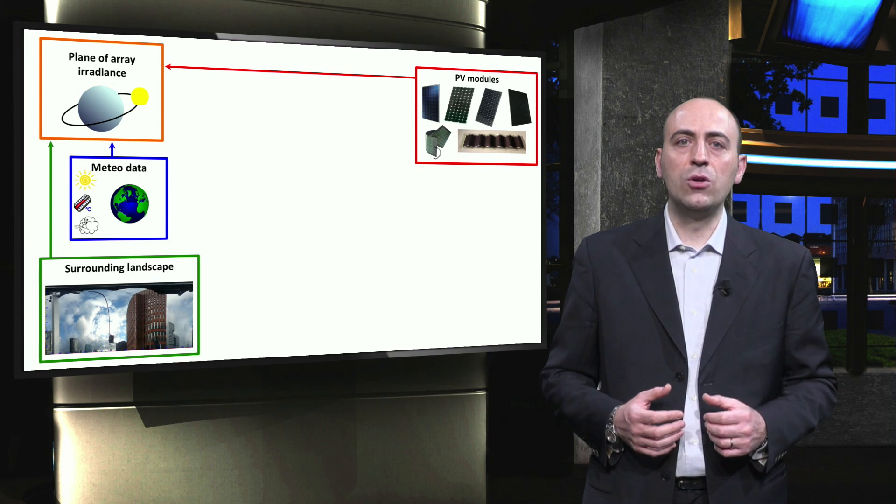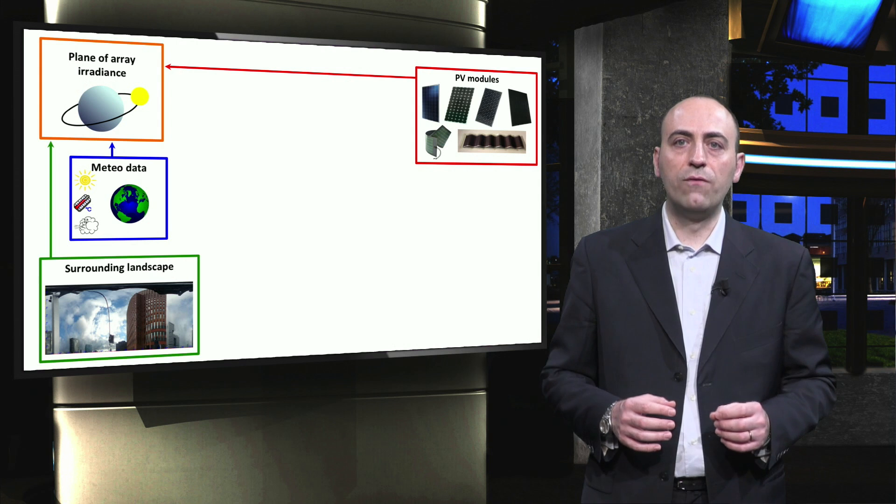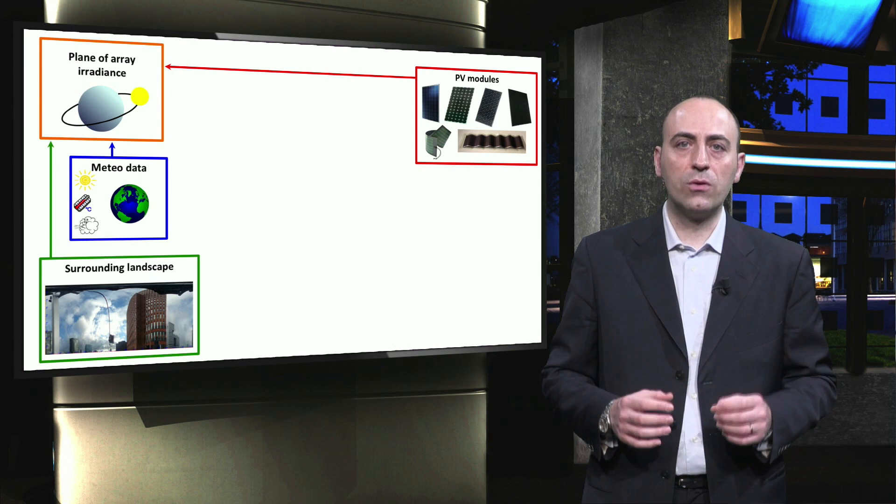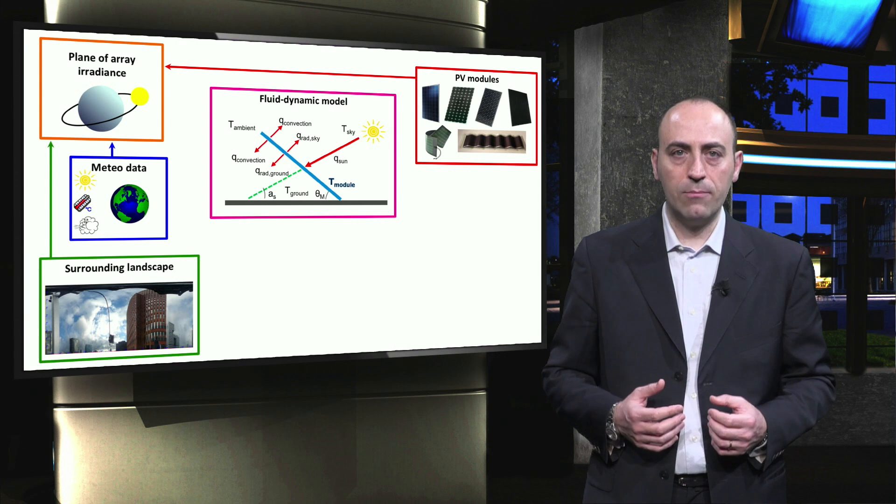The power output of a PV module does not only depend on the incident irradiance. The temperature of the modules plays an important role too. The module's temperature can be estimated by a fluidodynamic model.